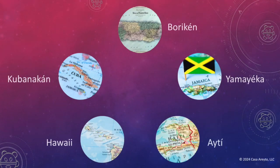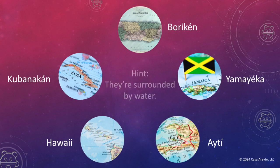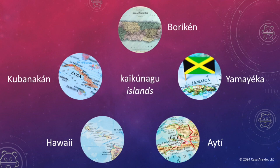That one was super obvious even if you didn't see our previous episode on transportation. Now let's take a look at the next one. This will be slightly more difficult and there's a hint. How are these things connected? Borikin, Yamayeka, Haiti, Hawaii, Kubanacan. There might be a couple of different answers here, so I've given you a hint — they're surrounded by water. So what's the connection? They are Kaikunagu — islands, of course.